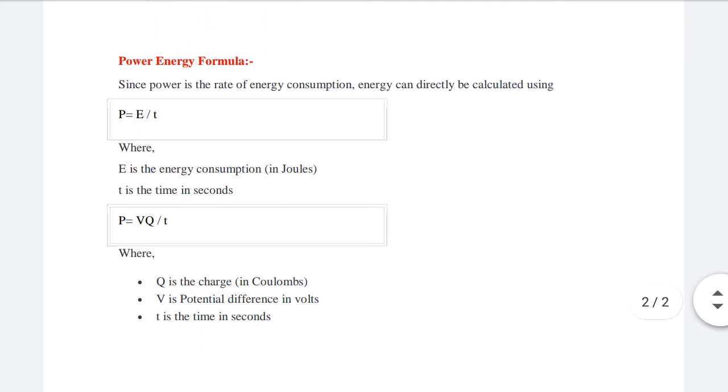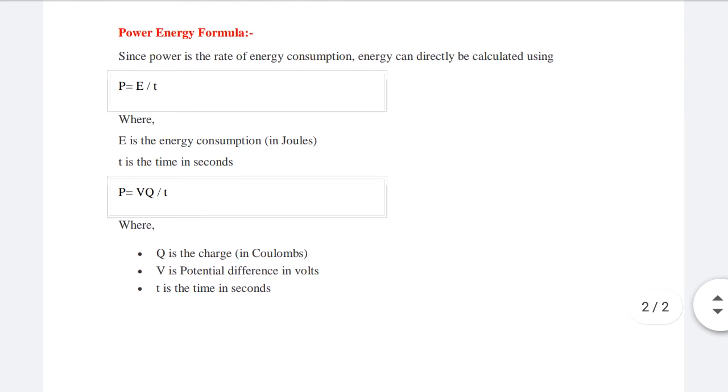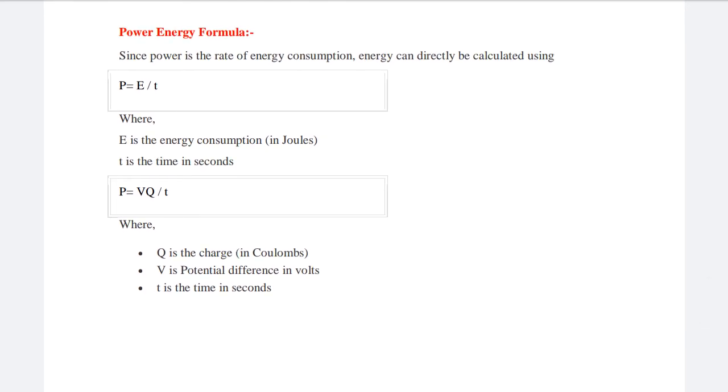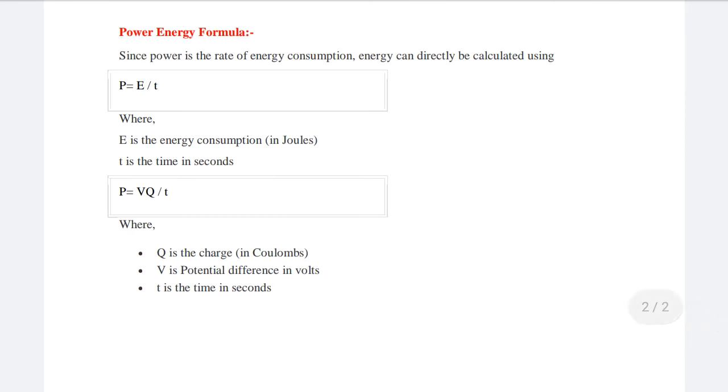Now let's see what is the power energy formula. Since power is the rate of energy consumption, energy can directly be calculated using the formula P equals to E by T, where E is the energy consumption in joules and T is the time in seconds.